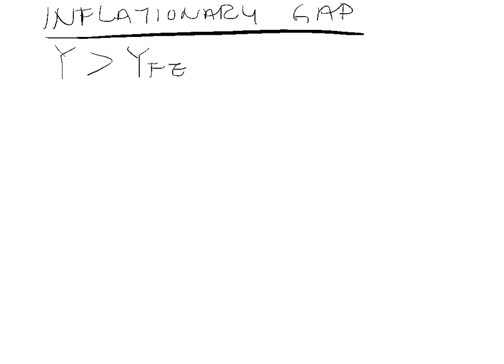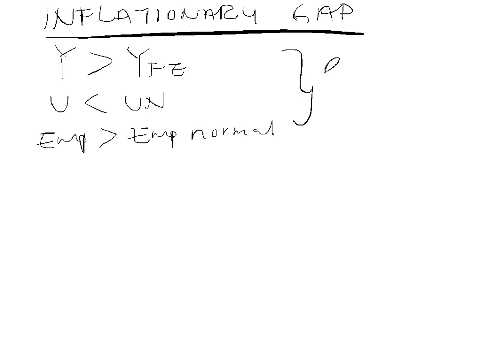So you're producing more than normal, which means that unemployment must be less than normal — unemployment is less than the natural rate of unemployment. Another way of looking at it is to say that employment must be greater than the normal level of employment. The economy is doing well; you are in an expansion or a boom.